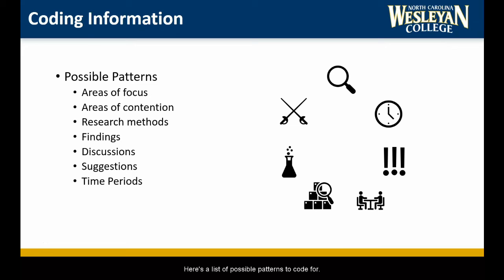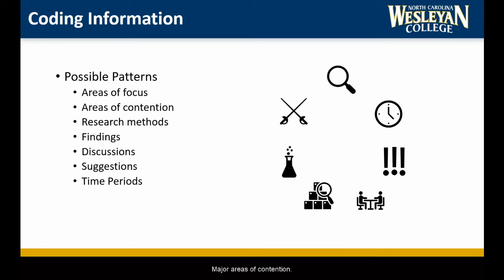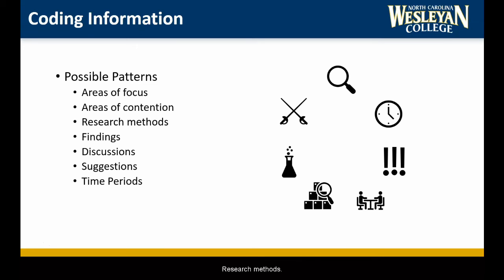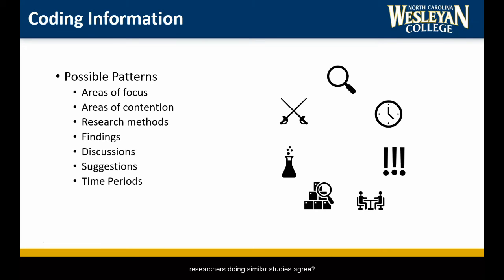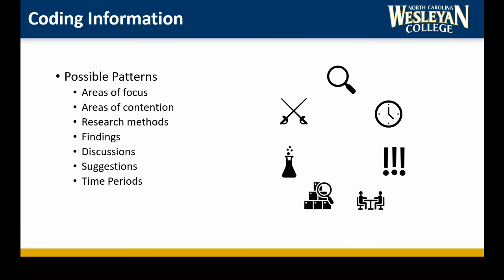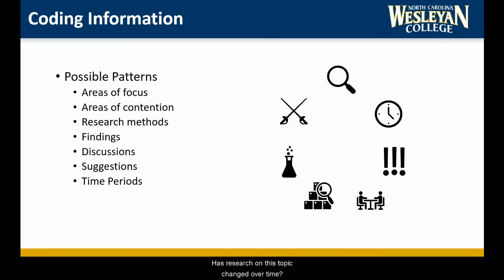Here is a list of possible patterns to code for. Major areas of focus: What are the major conversations that keep popping up in the literature? Major areas of contention: Are there aspects of the topic that researchers disagree about? Research methods: How are researchers collecting data? Findings: Does the data collected by researchers doing similar studies agree? Discussions: What conclusions do researchers come to based on their data? Suggestions: What advice do researchers offer based on their data? And time periods: Has research on this topic changed over time?